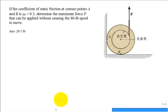Let's solve this problem. If the coefficient of static friction at contact point A and at contact point B is 0.3, so we have mu sub s equal to 0.3 and it's not different for the floor versus the wall. Determine the maximum force P.